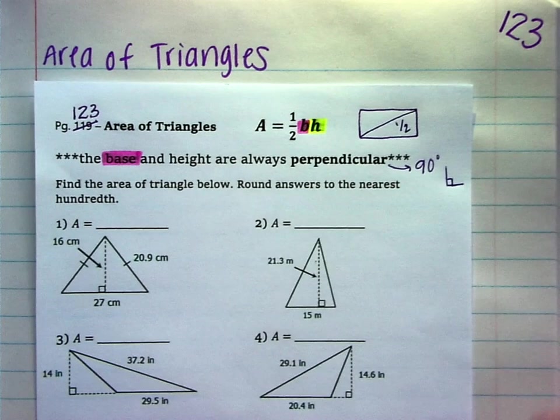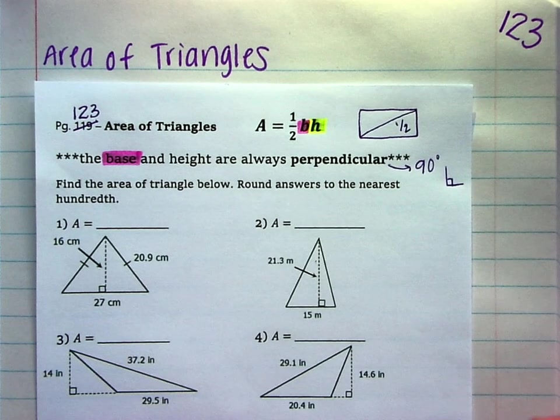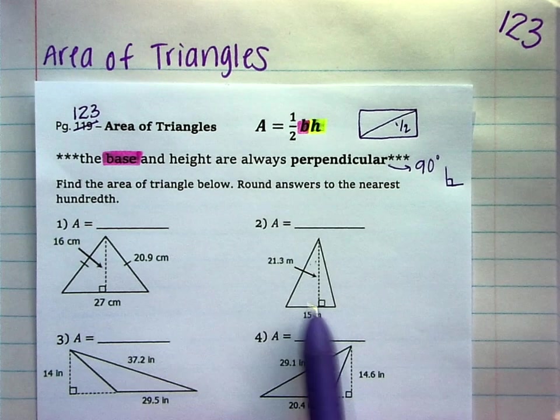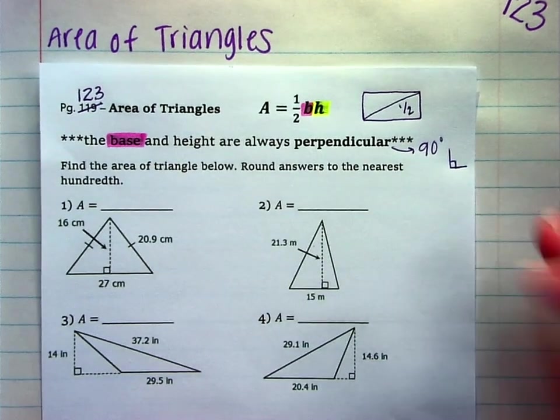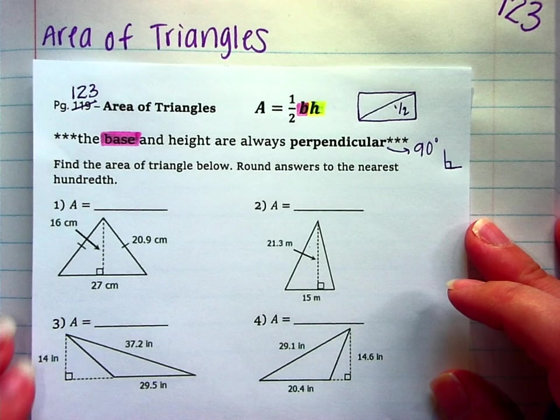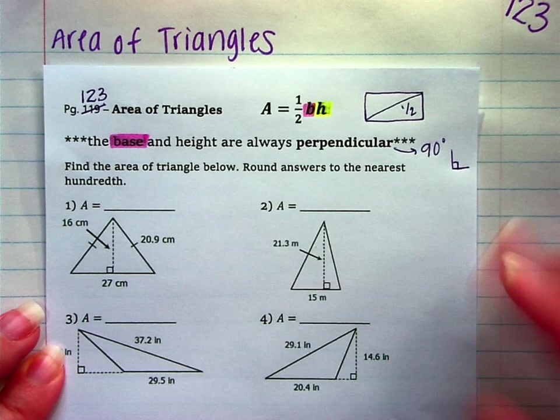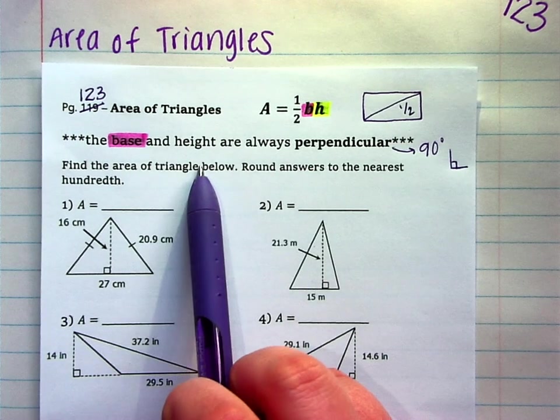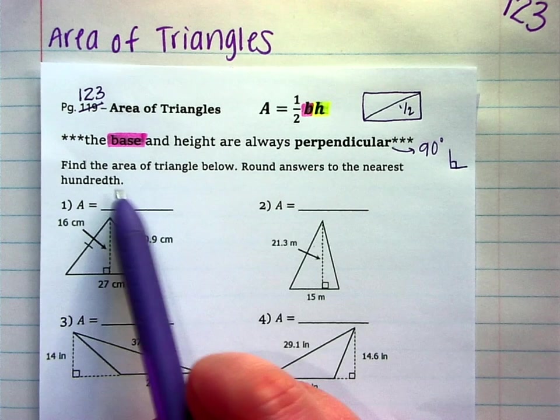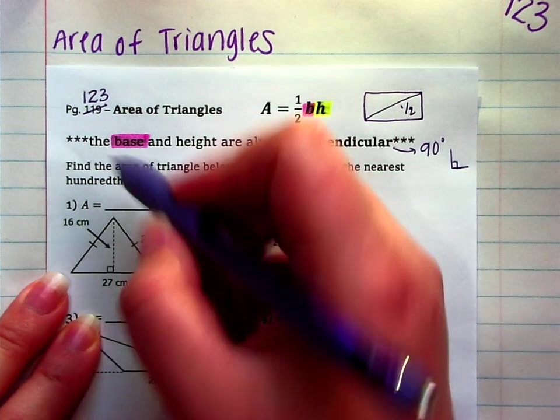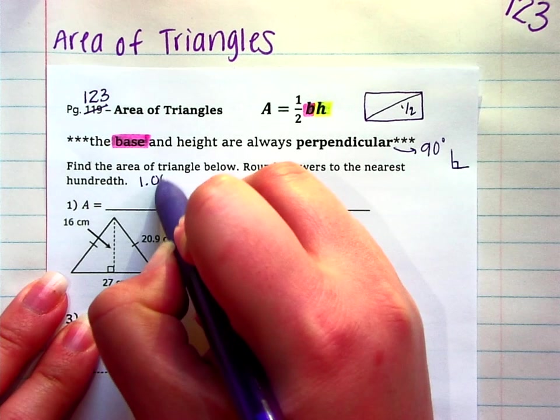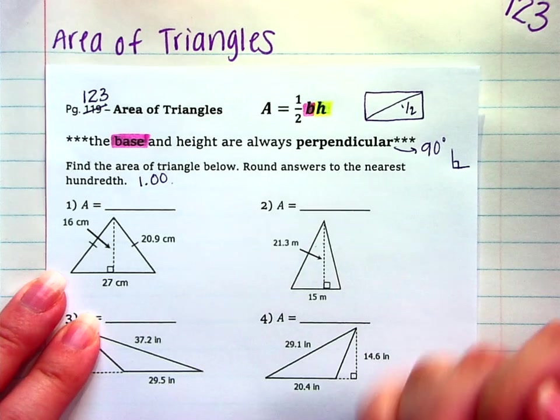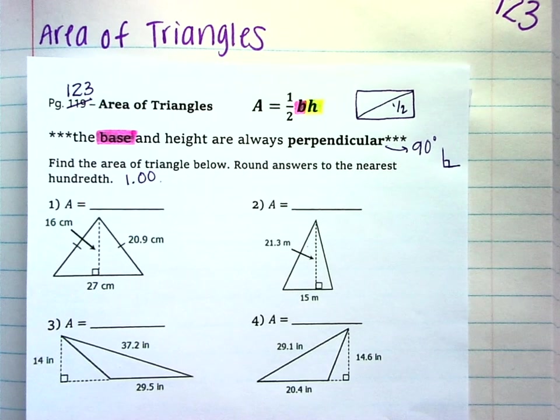All right, so same format. I'll do the odds. You'll do the evens. The odds and the evens are closely related. So this one is pretty similar to that one. And so on. All right, we're going to find the area of the triangle below. Triangles. Round answers to the nearest hundredth. So again, 100 has two zeros. So you can think of that as two decimal places. So we're going to round it to the nearest hundredth.